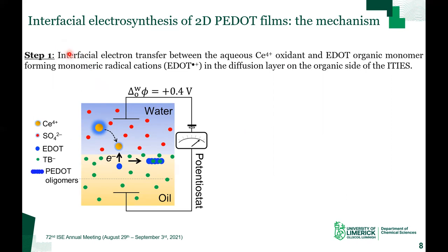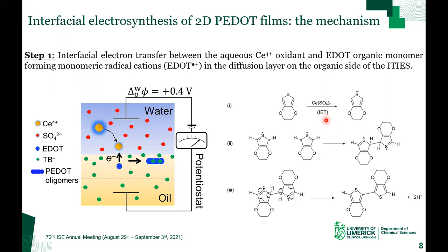The first stage is interfacial electron transfer, which occurs between the aqueous cerium(IV) oxidant and EDOT organic monomer, forming monomeric radical cations in the diffusion layer on the organic side of the ITIES. For interfacial electron transfer to proceed with appreciable kinetics, ITIES must be polarized positively, with the potential set to a value near the positive extreme of the galvanic polarizable potential window. The radical cations formed are stabilized by weakly coordinating organic anion — that's TB-minus — and these will further couple with each other, leading to the formation of dimers in the diffusion layer. Continuous radical cation generation by interfacial electron transfer and ensuing radical coupling steps ultimately lead to the formation of cationic PEDOT oligomers.